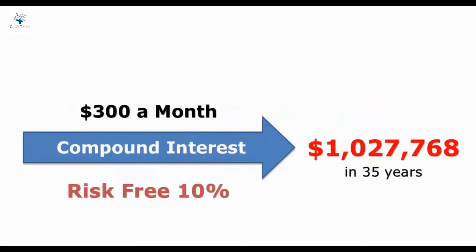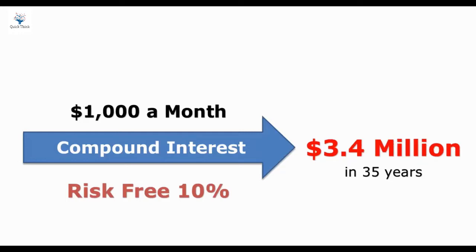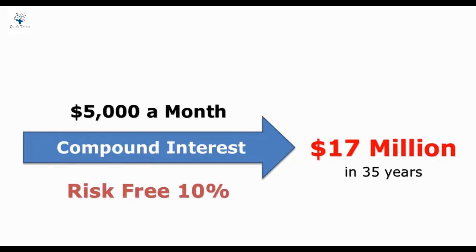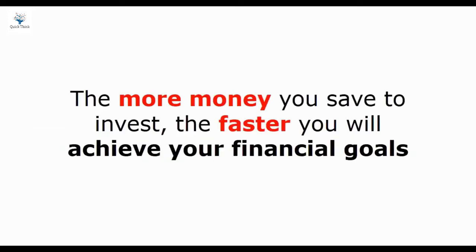If you start saving and investing $300 a month today and grow your investments by an affordable return of 10% from the stock market, you can easily build a net worth of $1 million or more. If you start saving and investing $1,000 a month today and do it the right way, sooner or later you'll be a millionaire. And if you're making a lot of money — maybe running a business or having a good job — try to invest as much as you can. If you save and invest $5,000 a month with the same 10% rate of return, you can turn your investments into $17 million in 35 years. The more money you save to invest, the faster you'll achieve your financial goals.